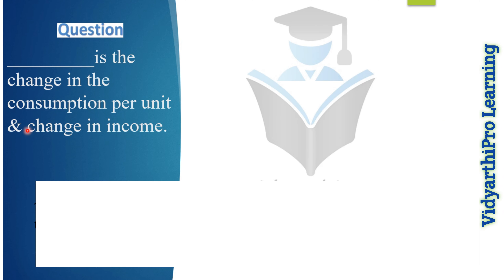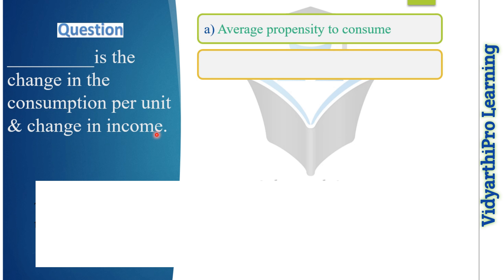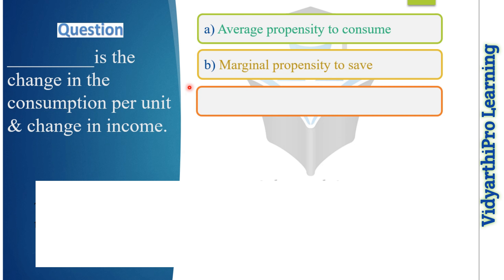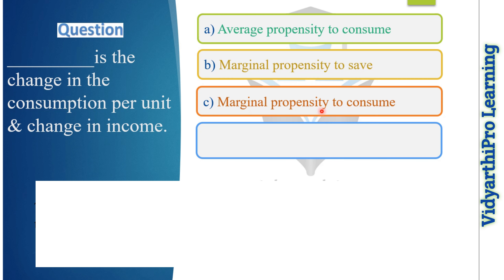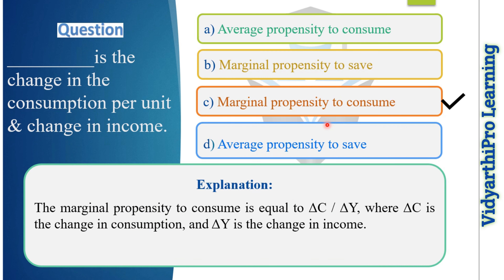Our next question: which option is the most suitable answer for 'the change in consumption per unit change in income'? Options: average propensity to consume, marginal propensity to save, marginal propensity to consume, or average propensity to save. The correct answer is option C, marginal propensity to consume, because MPC = ΔC / ΔY, where ΔC shows change in consumption and ΔY shows change in income.